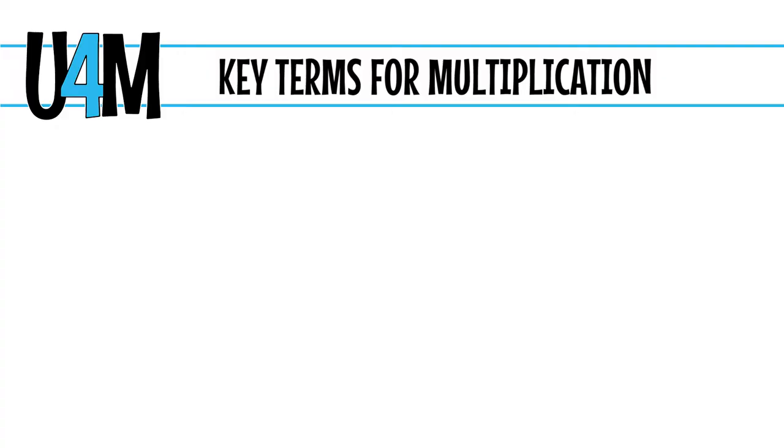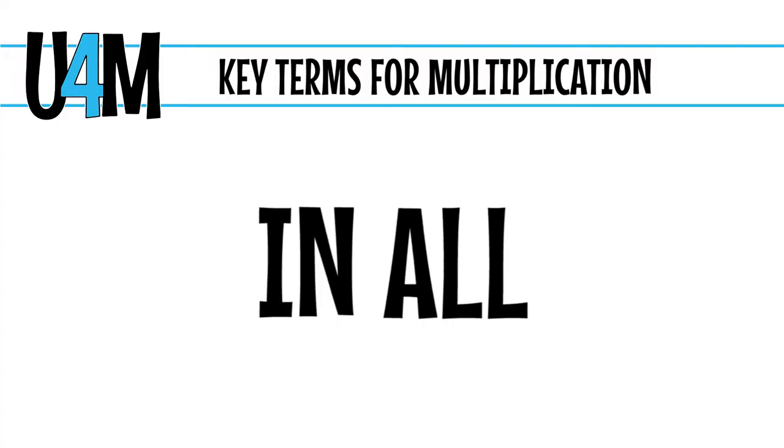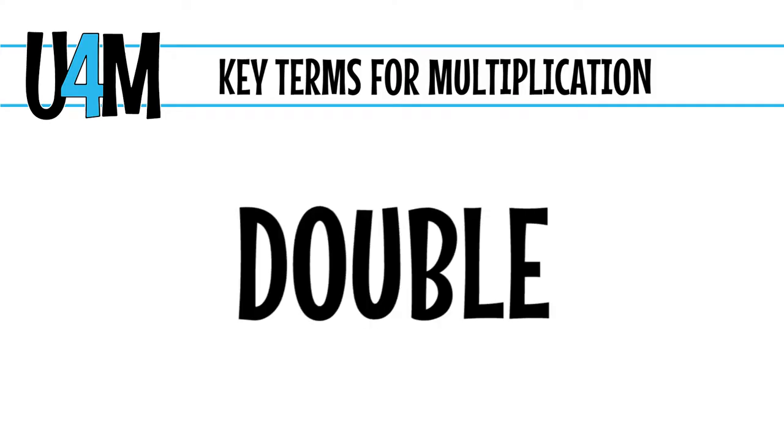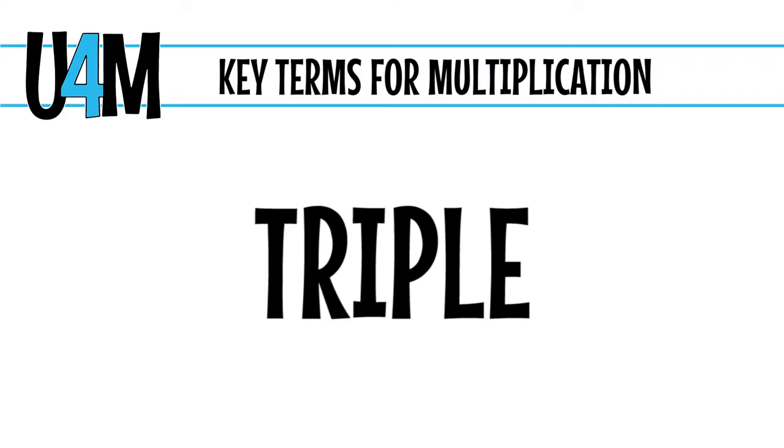In our next set we're going to be looking at the key terms for multiplication. In multiplication you'll find terms like times, each, in all, twice, product, area, double, multiplied by, and even triple. You'll notice that some of those terms for multiplication are the same as addition — because multiplication is just repeated addition. When you see multiplication problems you'll often find terms like 'each' and 'in all' paired together, so keep an eye on those, and when in doubt always draw out those problems.